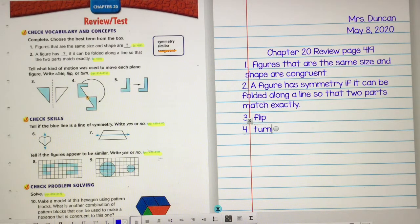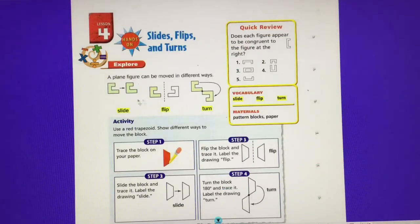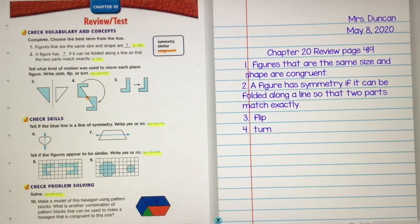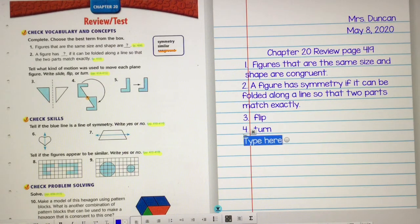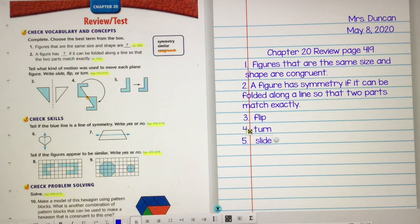Then number five. Did I do a flip like number three? No. Did I turn it like number four? No. So I'm thinking number five is probably a slide. Let's take a look back at page 414. Oh yeah, it definitely matches that. So number five is a slide.